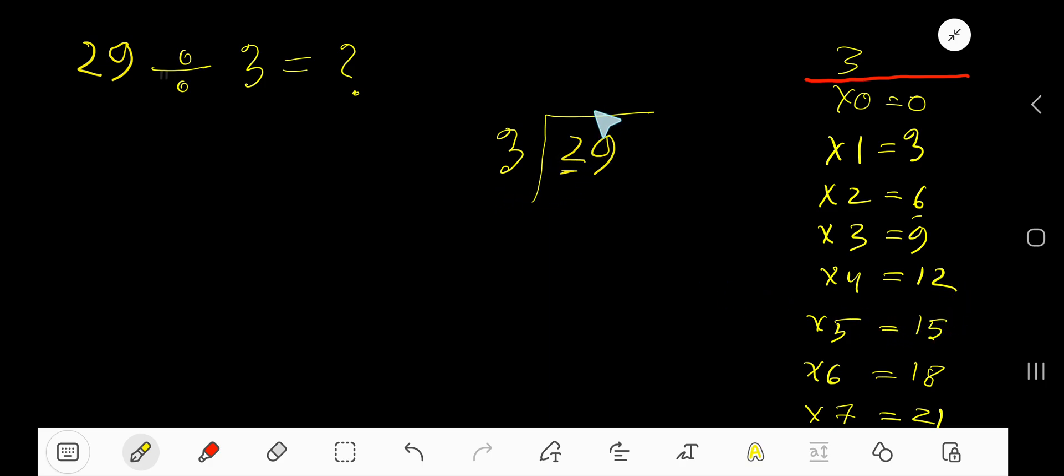Actually 0 times, as our current dividend 2 is less than 3. 0 times 3 gives us 0. Subtract, you are getting 2. Bring down this digit, 29. 3 goes into 29 how many times?